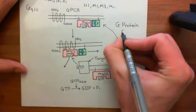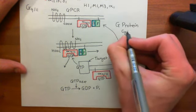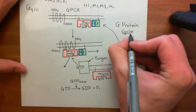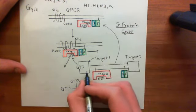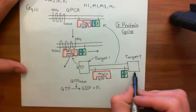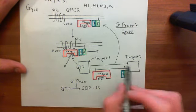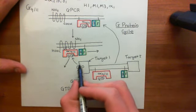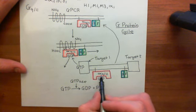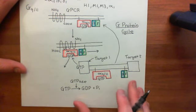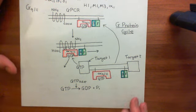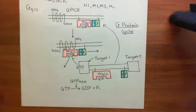We'll call it there for this video. In the next video, we'll see what target one actually is. We're going to talk about what the alpha-Q/11 subunit does once it's got GTP bound to it and is in the on state.